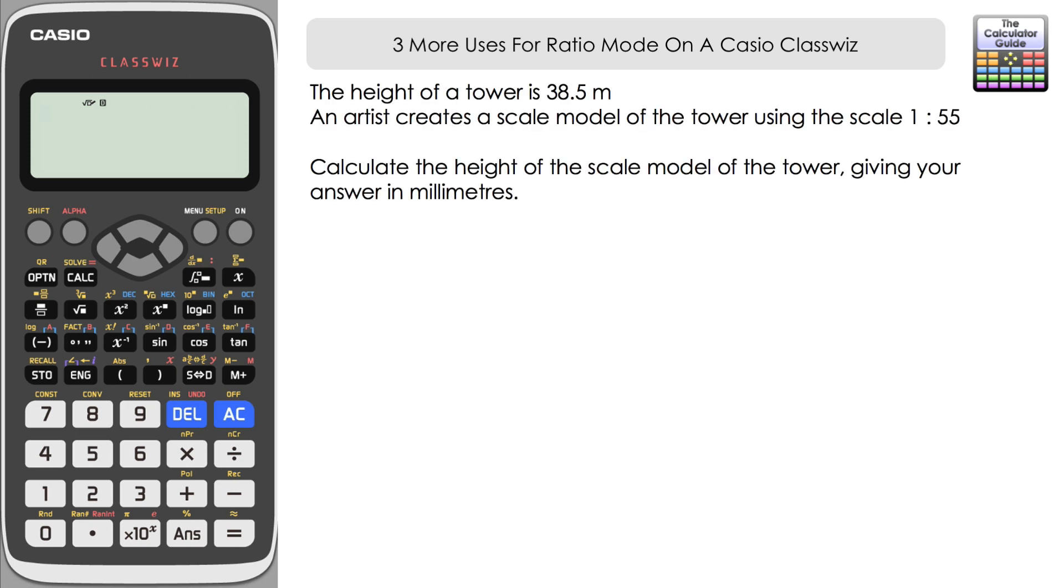Let's take a look at the first question. The height of a tower is 38.5 meters. An artist creates a scale model of the tower using the scale 1 to 55. Calculate the height of the scale model of the tower giving your answer in millimeters.